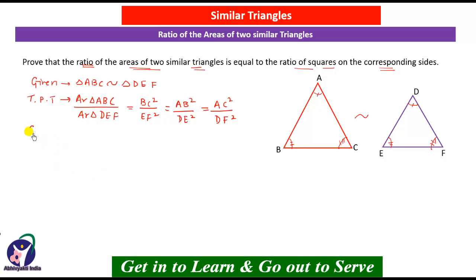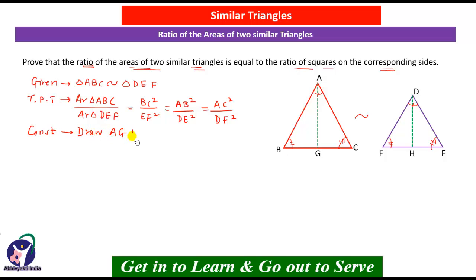Since we know these two triangles are similar, we will first do one construction. Construction: draw AG perpendicular to BC and DH perpendicular to EF. Since AG is perpendicular to BC, this angle will be 90 degrees, and since DH is perpendicular to EF, this angle will also be 90 degrees.